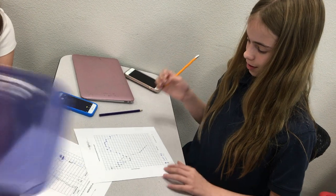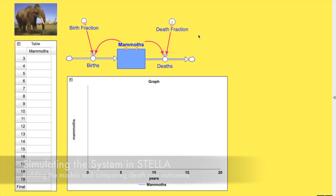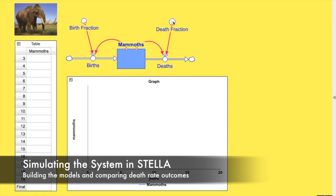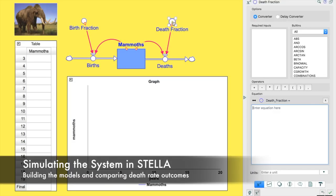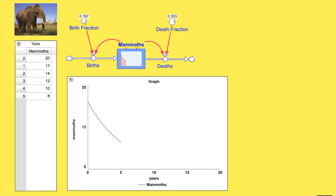Once students obtained their data from playing the dice games, they entered into modeling the same scenarios using Stella, examining what would happen to those same 20 mammoths. They initially set the death fraction to 2 out of 6 and took a look at the extinction curve that resulted from that death fraction.